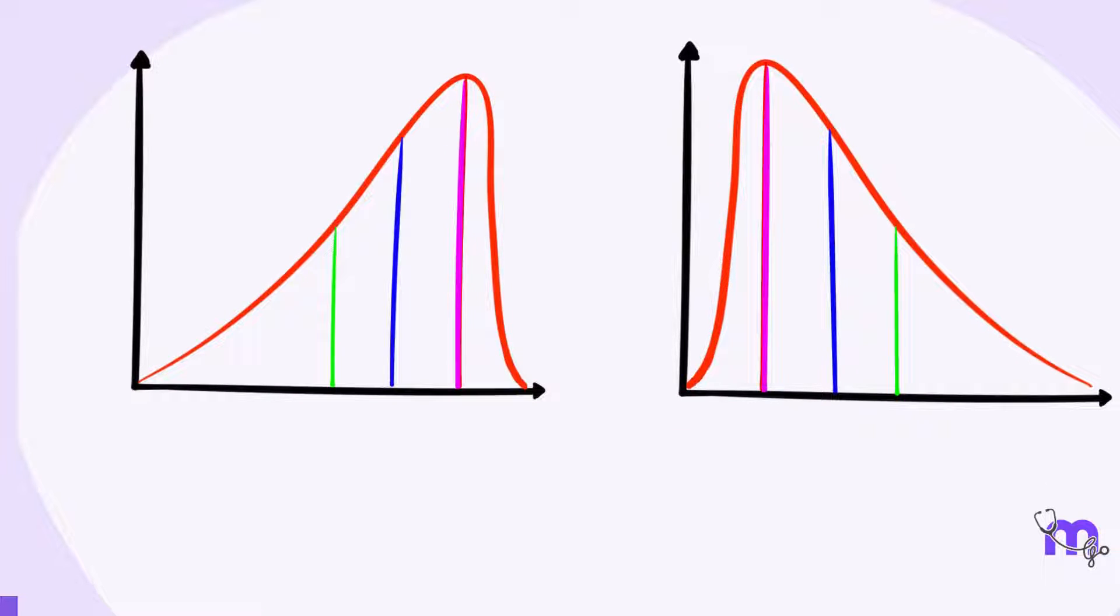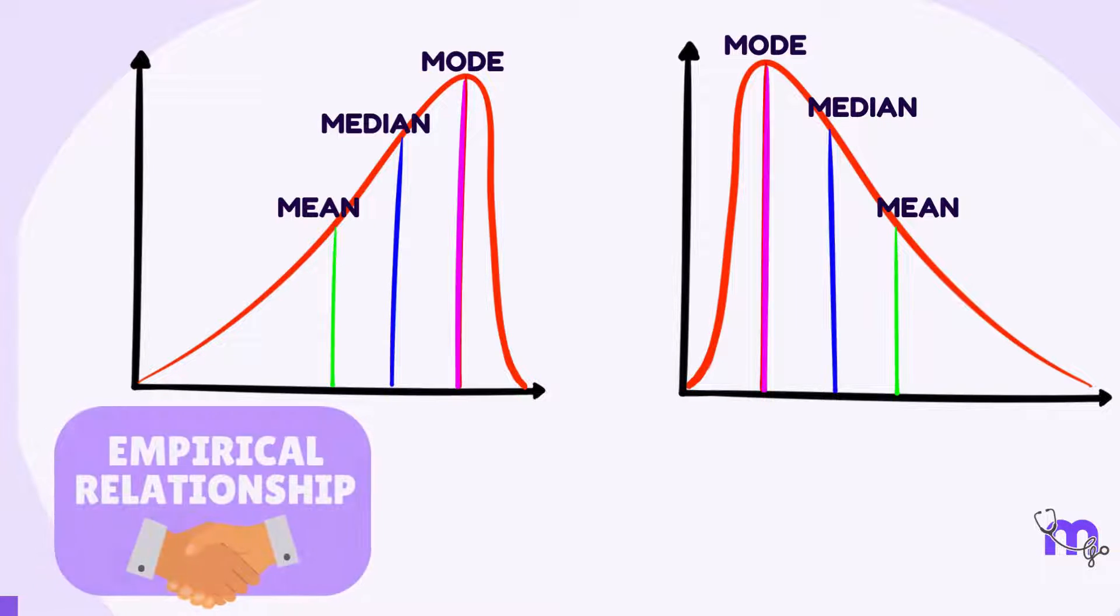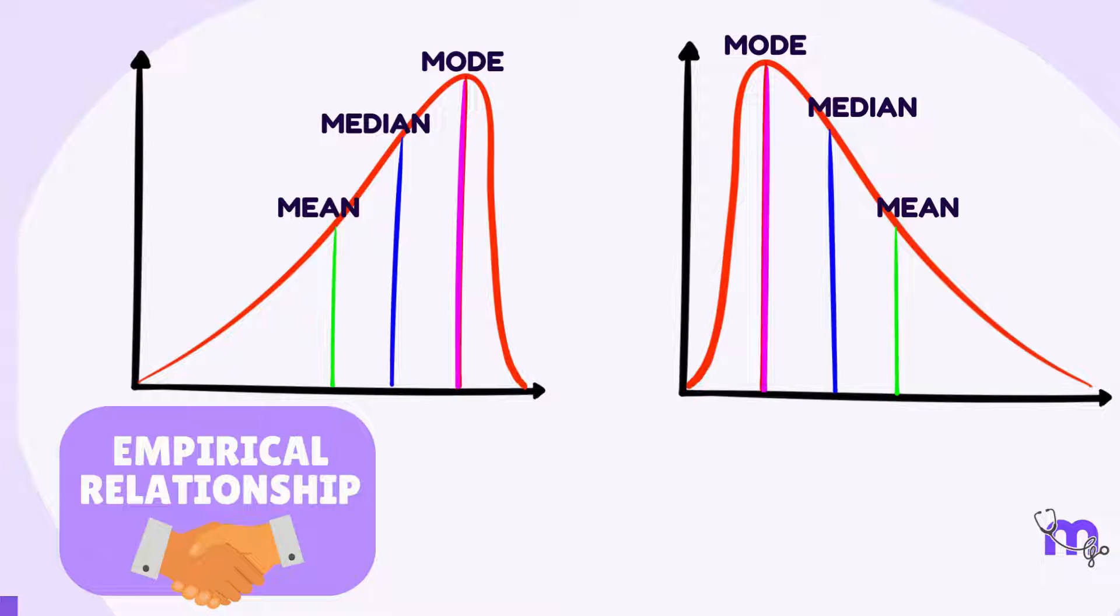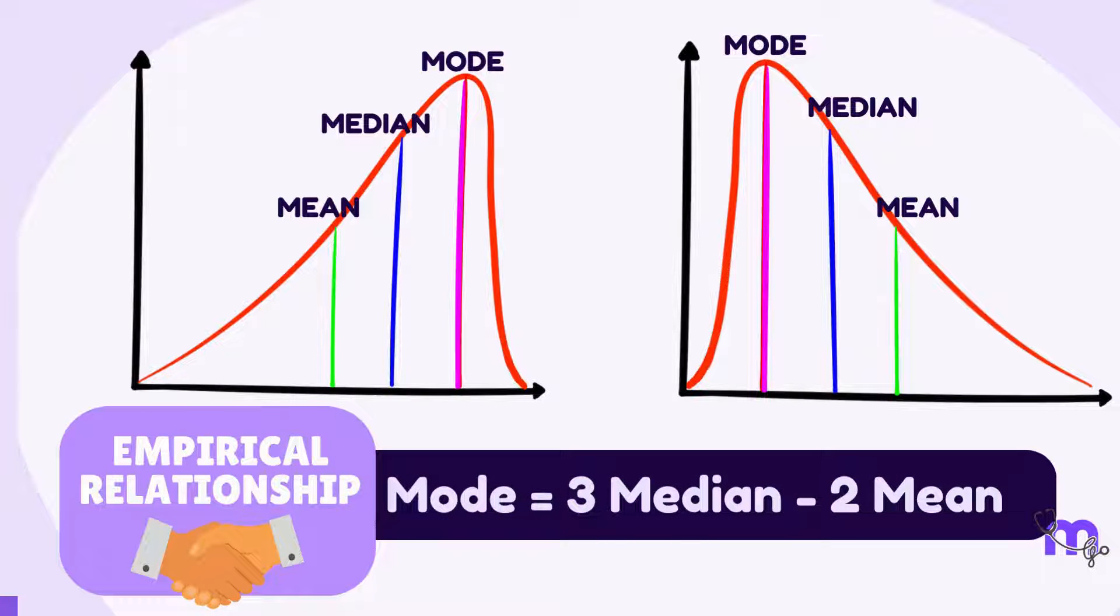Now, for a moderately skewed distribution, there exists a relation between mean, median, and mode. This mean, median, and mode relationship is known as the empirical relationship, which is defined as: mode equals the difference between three times the median and two times the mean.